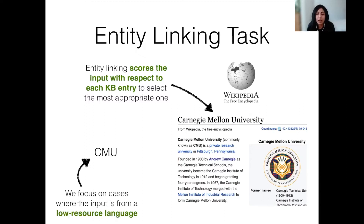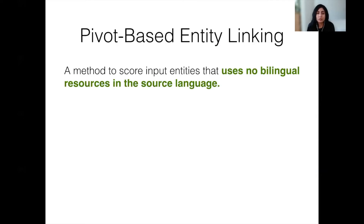In this part of the talk, I present a method for entity linking in the case where the input mention comes from a low-resource language, and the objective is to cross-lingually link it to an English knowledge base. The method, called pivot-based entity linking, does not use any resources in the source language for building the entity linking model. This is in contrast to existing methods which typically rely on Wikipedia language links in the source language.